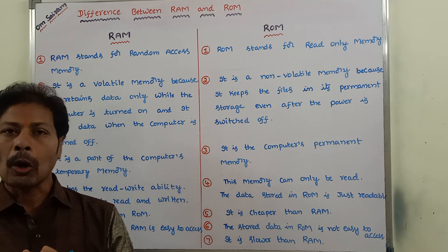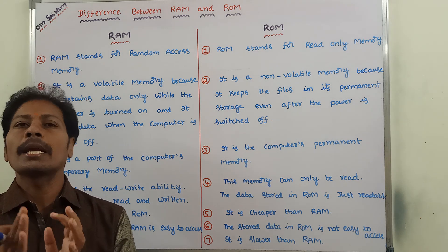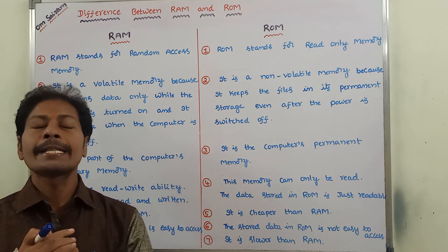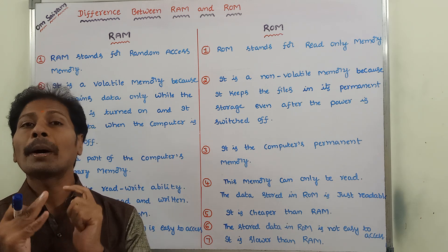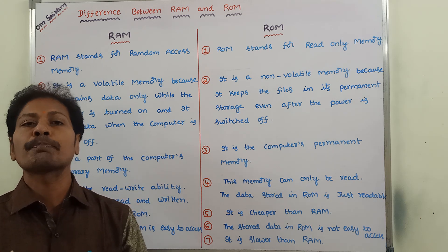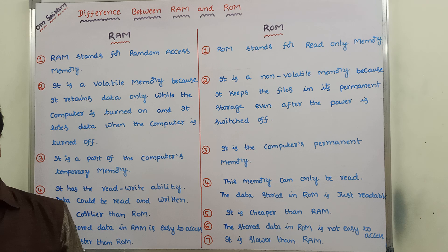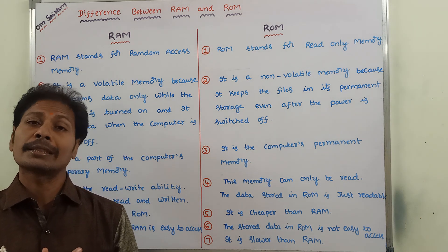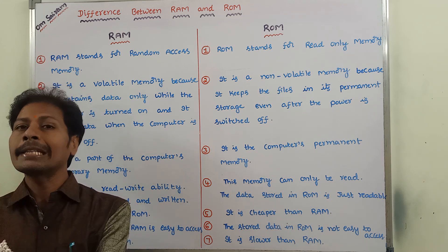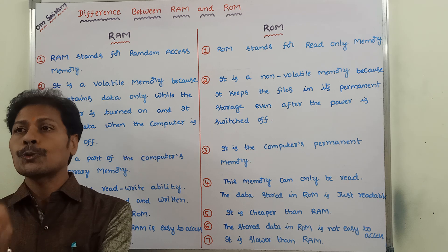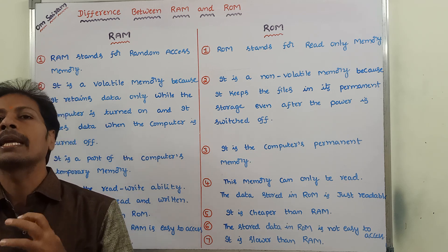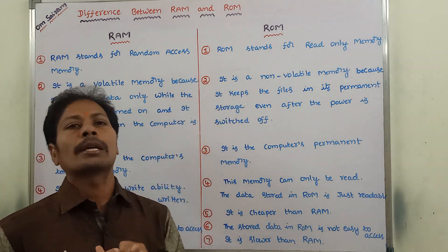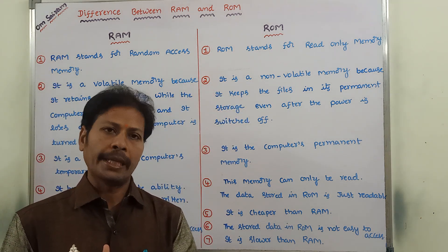Whereas, in the case of ROM, it is a Non-Volatile Memory because it keeps the files or our data permanently even when the computer's power is turned off. The data or files stored in ROM are kept permanently. Hence, we can say that ROM is a Non-Volatile Memory.